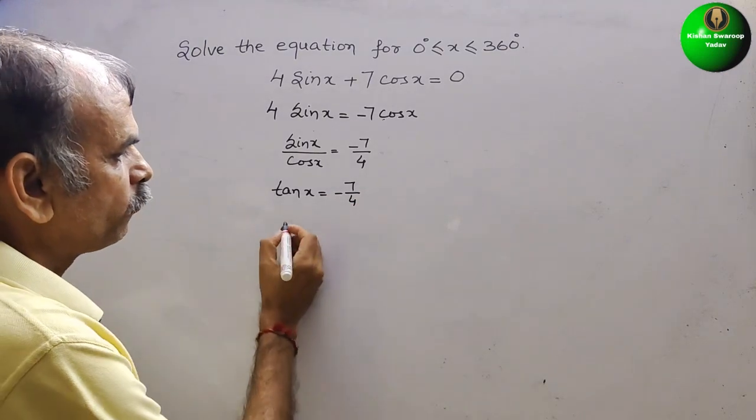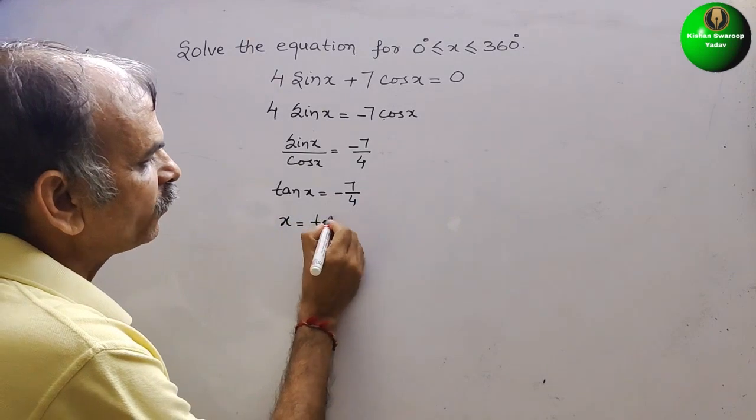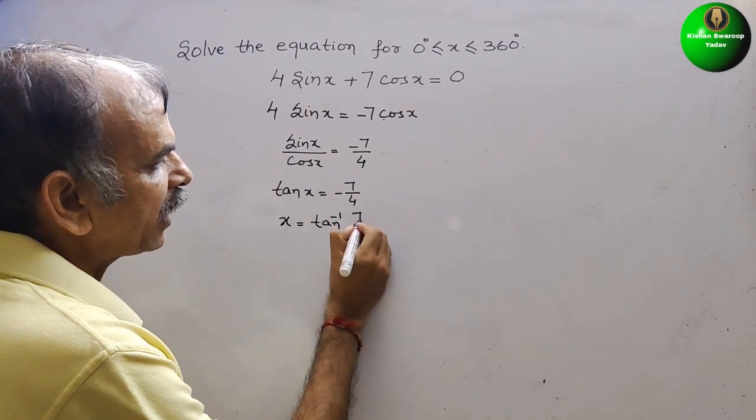Now, so what is your x? So x is tan inverse of 7 by 4.